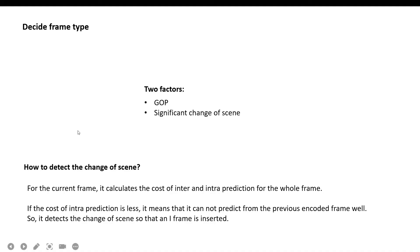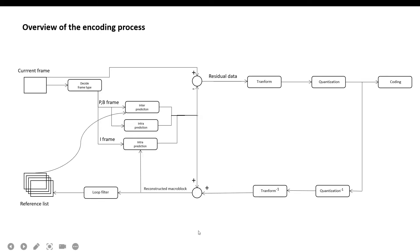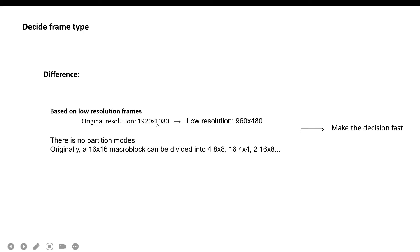How is a significant scene change calculated? For the current frame, it calculates the cost of inter and intra prediction for the whole frame. If the cost of inter-prediction is higher, it means the frame cannot be well predicted from the previous coded frame, so a scene change is detected and an I-frame is inserted. The prediction in this frame-type decision component is only about deciding the frame type — it is not related to the final bitstream, so it needs to be fast. The calculation is based on lower resolution frames; for example, if the original width is 1920, the lower resolution frame width is 960.